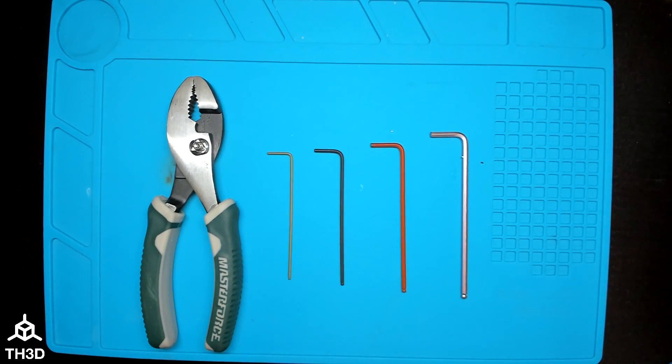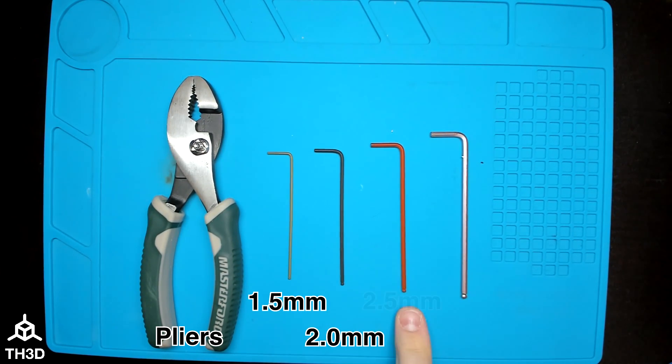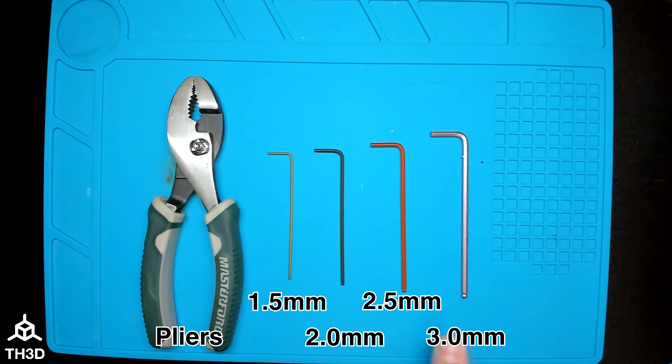The tools you'll need to complete this upgrade are as follows: a set of pliers, a 1.5 millimeter hex wrench, 2 millimeter hex wrench, 2.5 millimeter hex wrench, and a 3 millimeter hex wrench. These sizes all come with your 3D printers and the ones included with your machine will work fine.